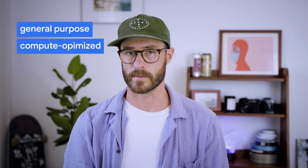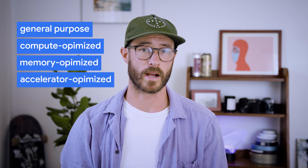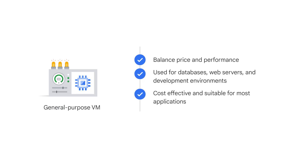There are four different types of Google Cloud Compute Engine families: General Purpose, Compute Optimized, Memory Optimized, and Accelerator Optimized. General Purpose machines balance price with performance, and they're typically used for databases, web servers, and development environments. If you're looking for a cost-effective option that's suitable for most applications, look no further.